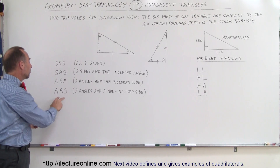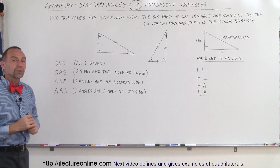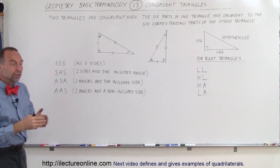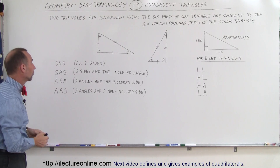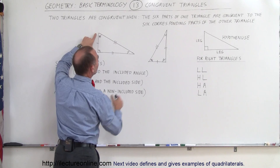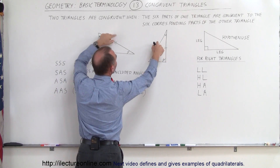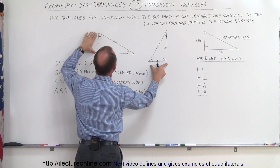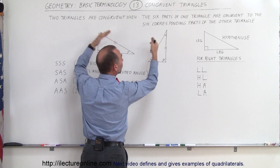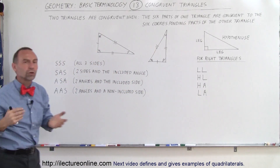And finally, if two angles and the non-included side are equal from one triangle to the other, then they are congruent as well. For example, if we take any two angles and one side — maybe this side — and those two angles and that side are congruent to the corresponding parts in the other triangle, then the two triangles are congruent. This is the AAS case.